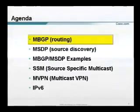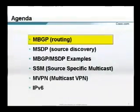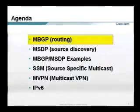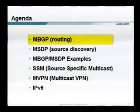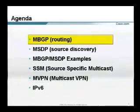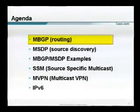The agenda we'll go through: first, we'll talk about the protocols used today to make multicast work — multiprotocol BGP and MSDP. Those are the two primary protocols being used today and in the foreseeable future. I'll share deployment scenario examples, including how we're getting multicast to work here at NANOG. Towards the latter part, I'll present source-specific multicast, multicast VPNs, and multicast in the IPv6 world.